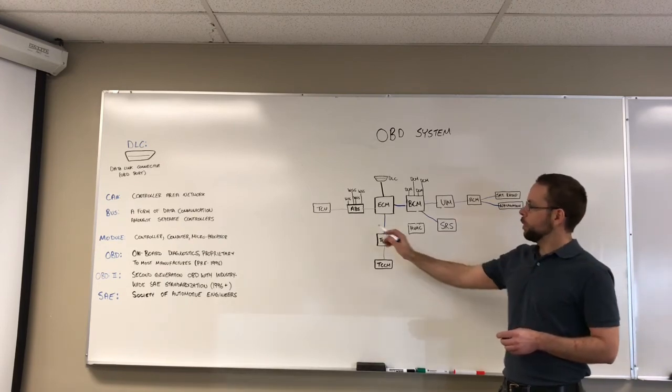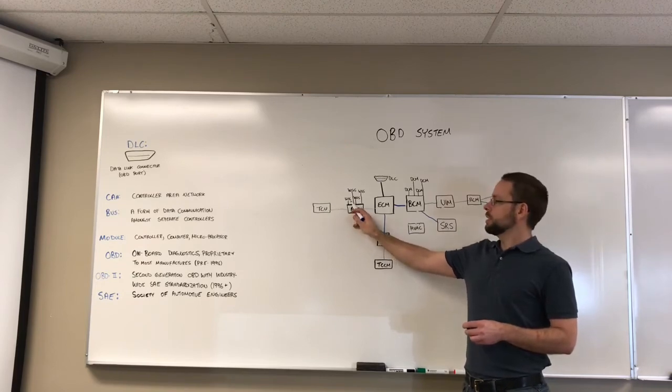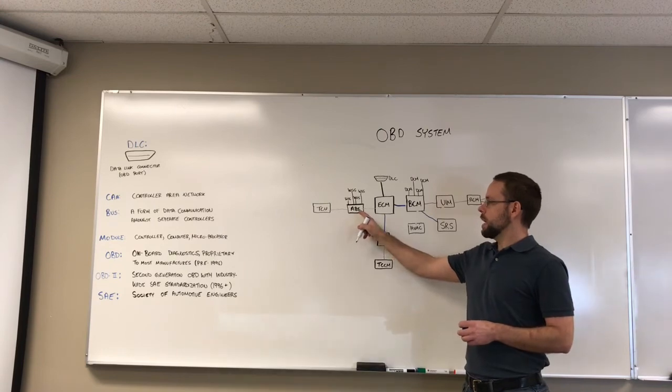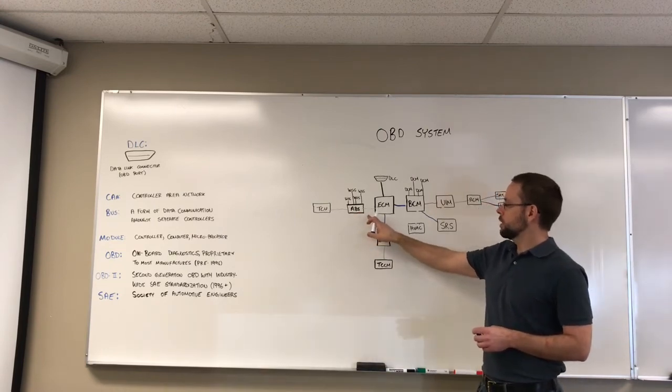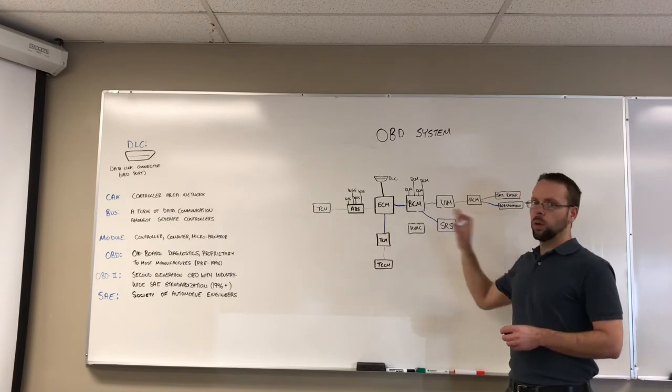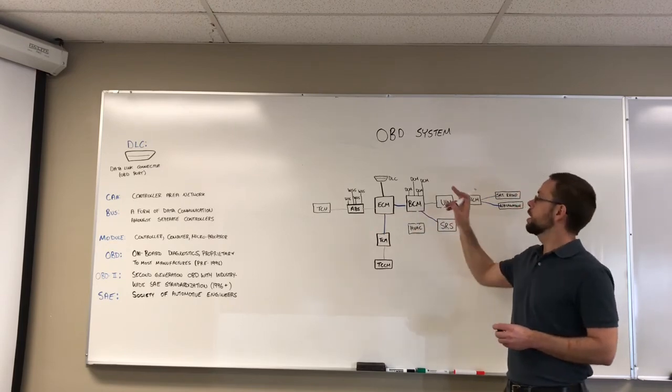So just as an example in the ABS system we're going to have wheel speed sensors. One wheel speed sensor for each wheel that is going to communicate with the ABS module which will then communicate with the ECM and all of these can control or talk to each other through this system.